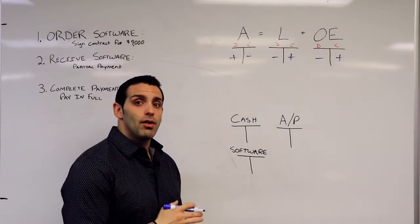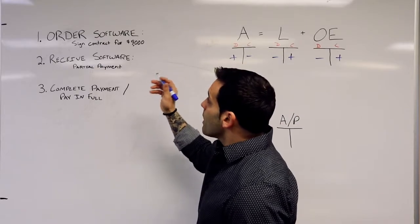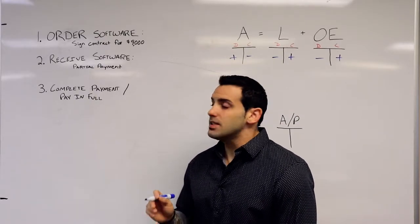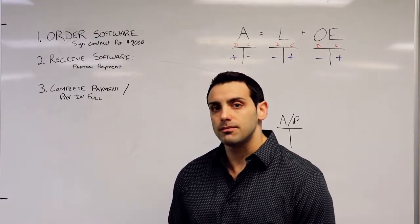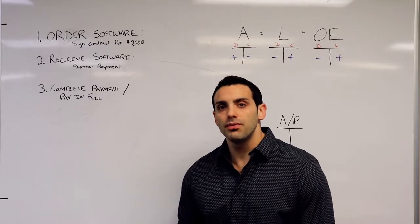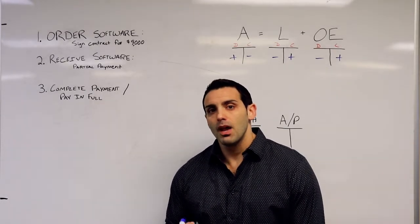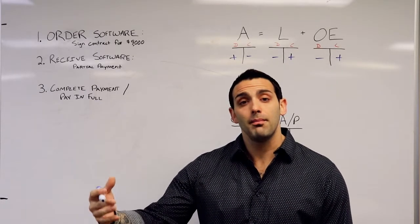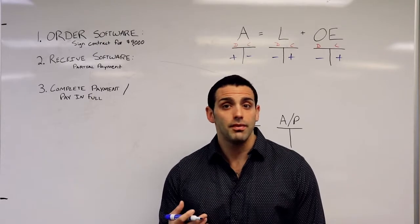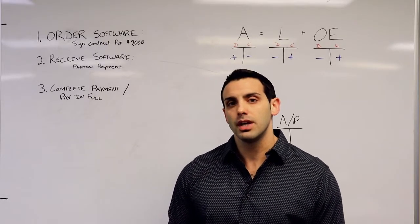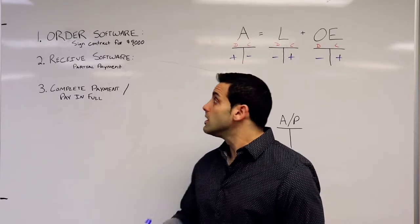Now the first transaction is my company signs a contract for a mobile app to be developed for $9,000. What's the journal entry for this? Well, there is no journal entry because right now I have not given them any payment and they have not delivered any code or software. I've signed the contract, so the only thing that has been exchanged is promises. When that's the case, no journal entry is required.